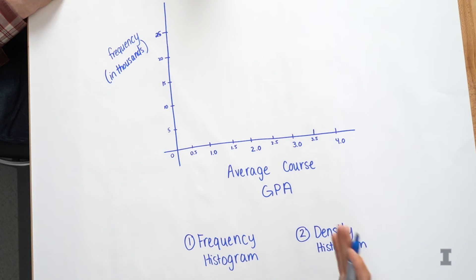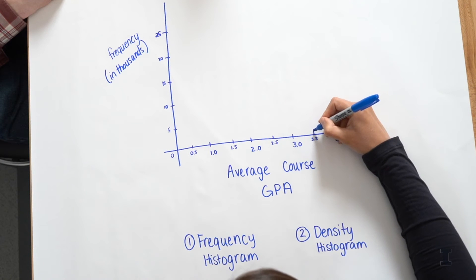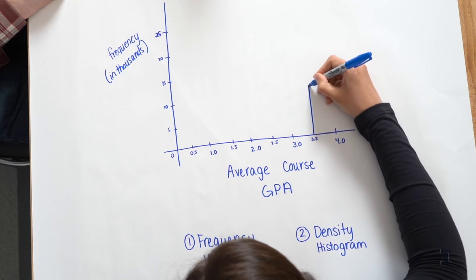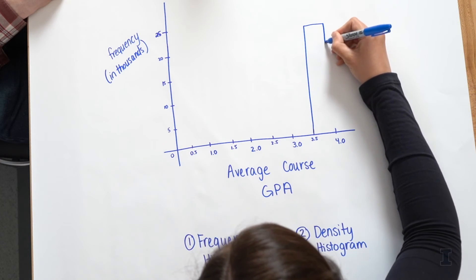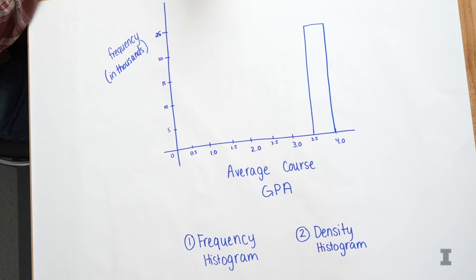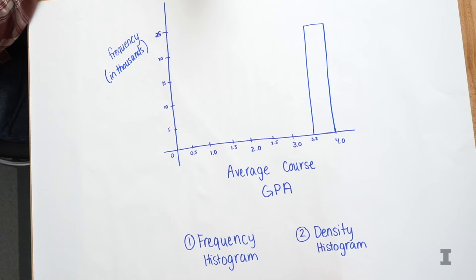So I'm going to go ahead and draw my bar. So histograms are visualizations that have a bunch of bars. And again, that's going to represent my frequency. So I'm going to go all the way up. I'm going to start at 3.5, go all the way up to about 22,000 and make my first bar. And then moving over between 3 and 3.5, there's 21,752 courses.